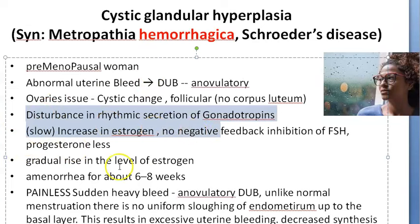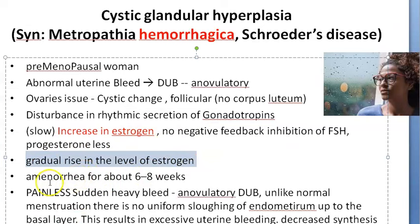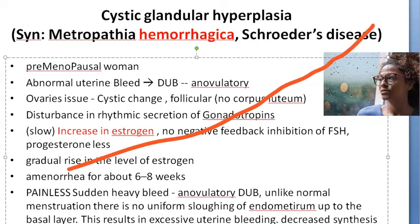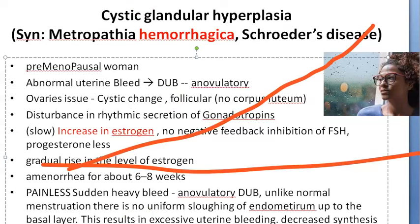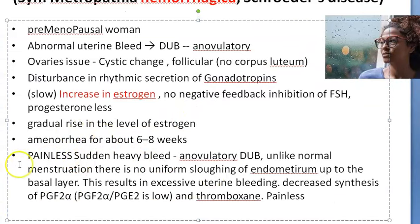What is exactly happening here? There is a disturbance in the rhythmic secretion of gonadotropins — obviously it is premenopausal. There is an increase in estrogen and no opposition from progesterone. So estrogen keeps going, she will not be shedding the endometrium. The endometrium keeps increasing for six to eight weeks — she will not have her period. The endometrium keeps growing with no one to stop it because estrogen is being provided.